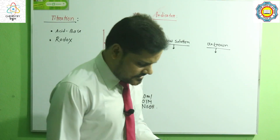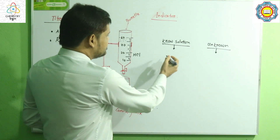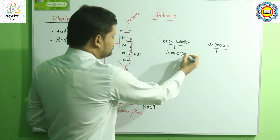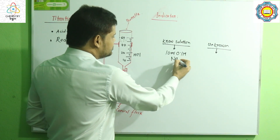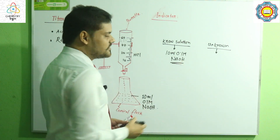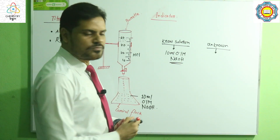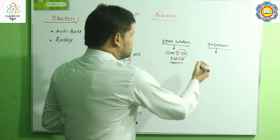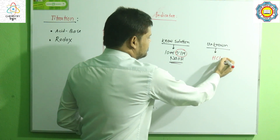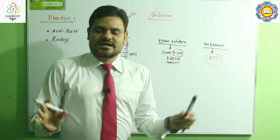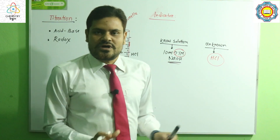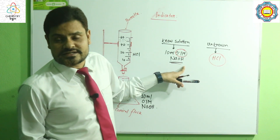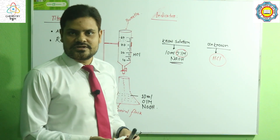Dear learners, if I take 10 milliliter of 0.1 molar sodium hydroxide solution, this solution is known to us because the molarity is 0.1 — the molarity is known to us. On the other hand, if we have an HCl solution but the molarity is unknown, we want to determine the concentration of HCl by using this known solution. This is the titration — this is an experimental process.